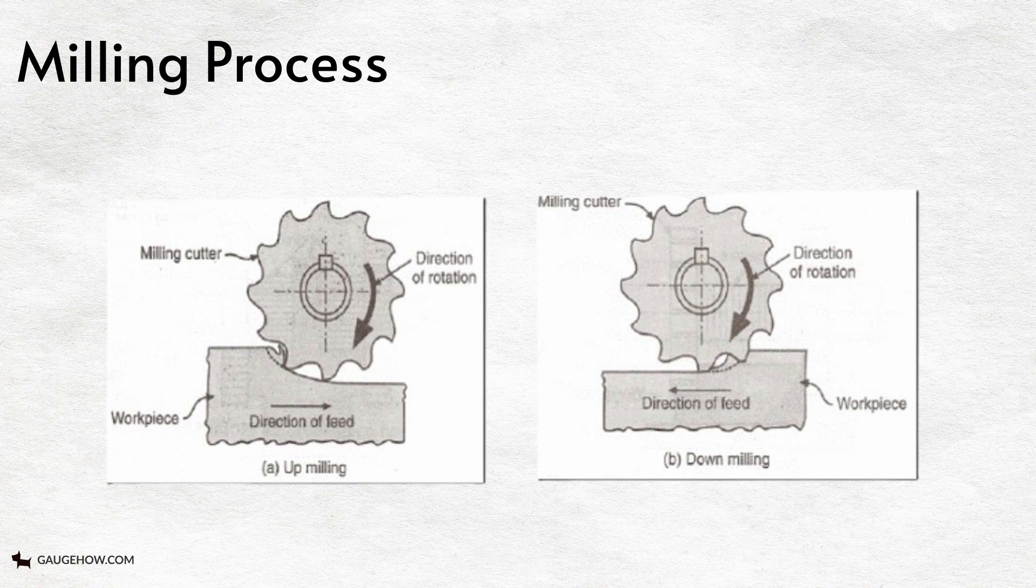In up milling, the cutting teeth try to uproot and lift the workpiece from the machine table. In down milling reverse happens.